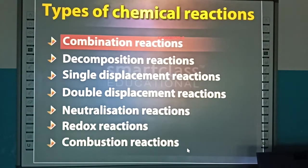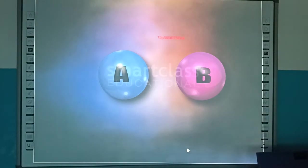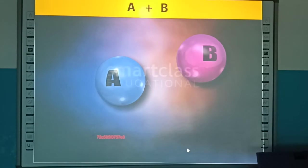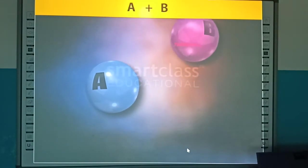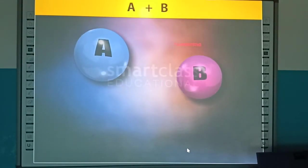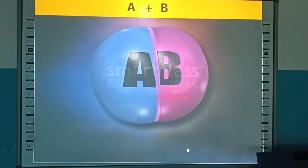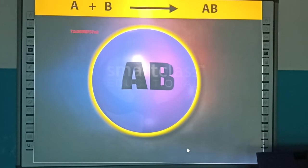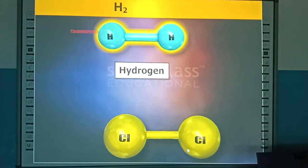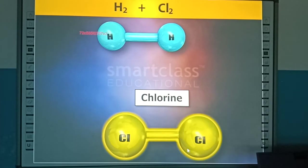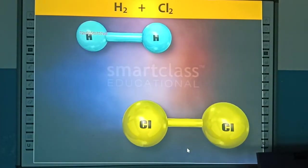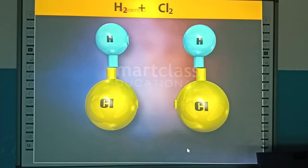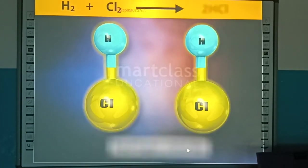Combination reactions are chemical reactions in which two or more chemical substances combine to form a product. For example, hydrogen and chlorine combine to form a chemical product.